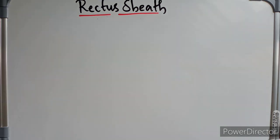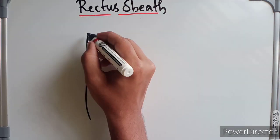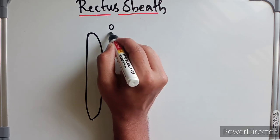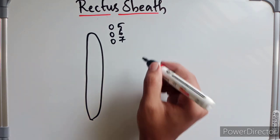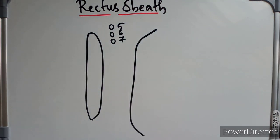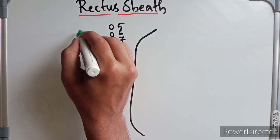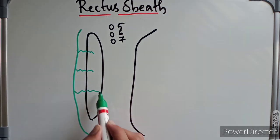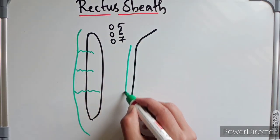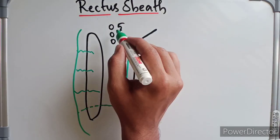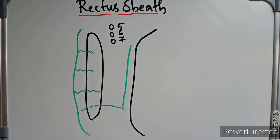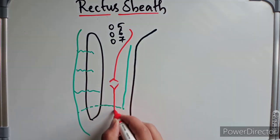Coming to the anterior and posterior walls of the rectus sheath — I am going to draw the rectus abdominis muscle here. This is the rectus abdominis muscle; these are the costal cartilages 5, 6 and 7. This is the posterior abdominal wall. We have the rectus sheath here in green. This is the anterior wall of the rectus sheath; it has its tendinous insertions into the rectus abdominis muscle. The posterior wall ends at a certain level. Here we find the diaphragm, and the two arteries — the superior epigastric artery and the inferior epigastric artery.